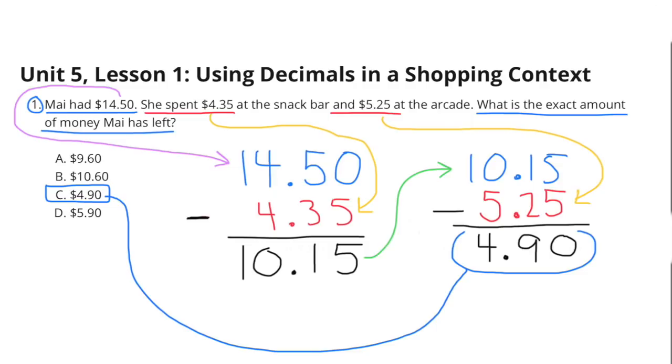$14.50 minus $4.35 equals $10.15. Then she spent $5.25, so $10.15 minus $5.25 equals $4.90.